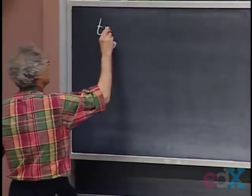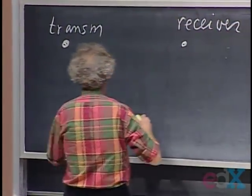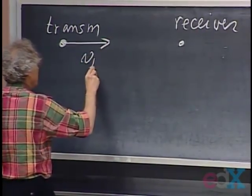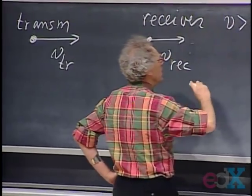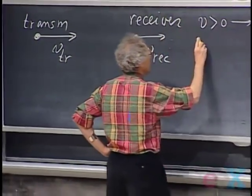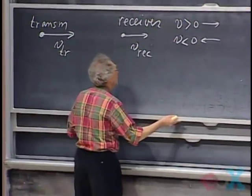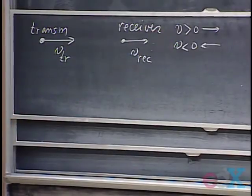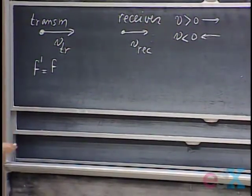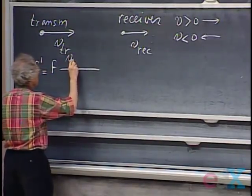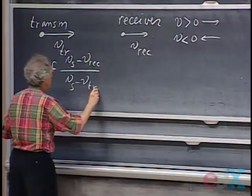Let this be the transmitter of sound, and this is the receiver of sound — could be you, your ears. Suppose this is the velocity of the transmitter, and this is the velocity of the receiver. V should be larger than zero if the velocity is in this direction, and smaller than zero if it is in this direction. The frequency the receiver will experience — will hear — I call F prime, and F is the frequency as transmitted by the transmitter. F prime equals F times the speed of sound minus V receiver, divided by the speed of sound minus V of the transmitter.